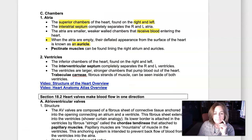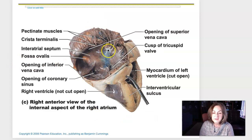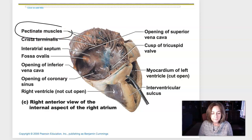Pectinate muscles can be found lining the right atrium and the auricles. Pectinate muscle is a stringy, comb-like muscle. Here they're opening up an atrium, and you see all this linear, root-like pattern — that's pectinate muscle in the right atrium. You might be able to see that if you do the sheep heart dissection.